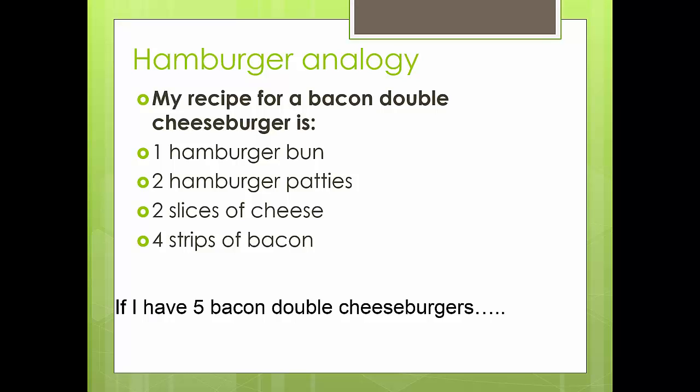So if we're going to make a bacon double cheeseburger, here's your basic recipe: one hamburger bun, two hamburger patties, two slices of cheese, four strips of bacon. If you have five bacon double cheeseburgers, you know you have to keep all of these in the same ratio. So it's going to take five hamburger buns, 10 hamburger slices, and then 20 strips of bacon, because you have to keep everything in the same proportions.